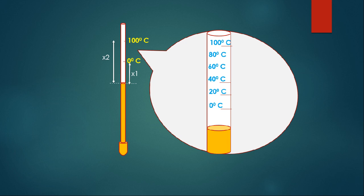I forgot to mention one point: after 1954 we use the triple point of water — the point at which the three phases of water, gas phase, liquid phase, and solid phase, are in equilibrium. That triple point of water is used as the basis for temperature measurement.